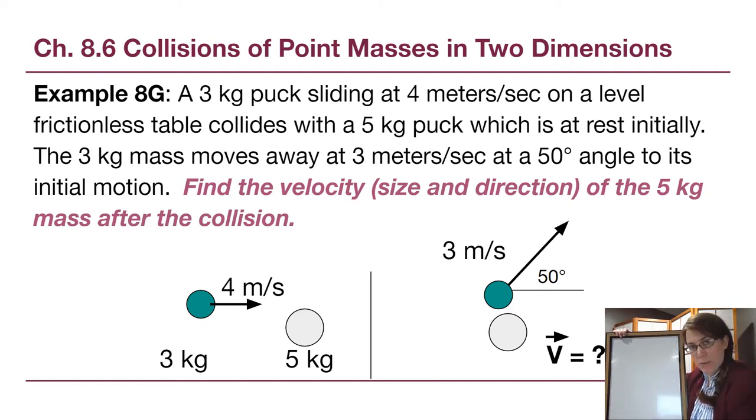All right, the last problem type that comes out of chapter 8 is two-dimensional collisions. We're going to see two different examples here where in both cases the equation we're using is still the momentum conservation equation, but we have to write it down separately in x and separately in y. We need to be aware of that as we're setting the problem up. So for this example, we can start by drawing the picture.